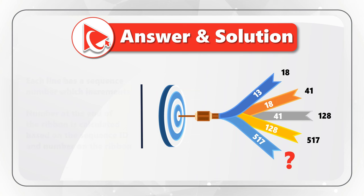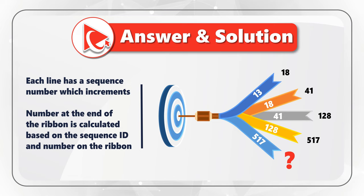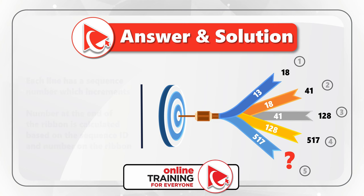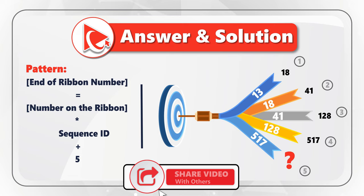Let's look closely at the dart we're dealing with. Our dart is unique because it has ribbons. There is a number on the ribbon and a calculated number at the end of the ribbon. To complete the calculations, let's assign each ribbon a unique number. We're dealing with ribbons 1, 2, 3, 4, and 5. The number at the end of the ribbon is calculated based on the sequence ID and number on top of the ribbon itself.